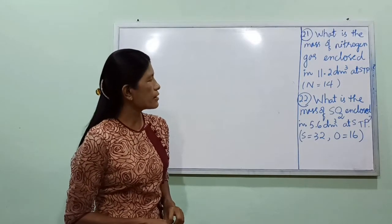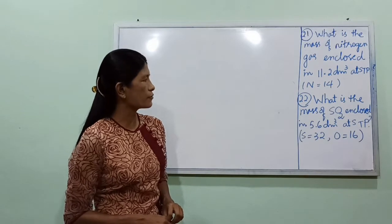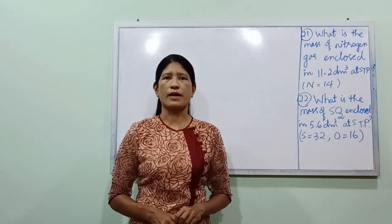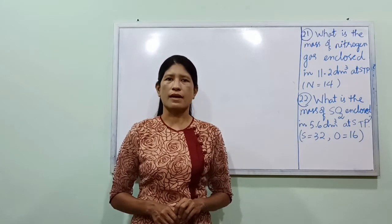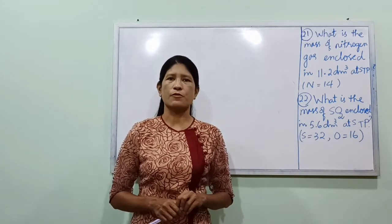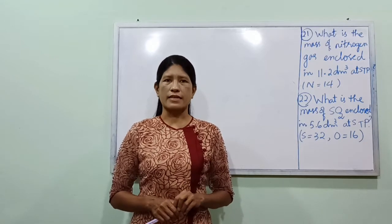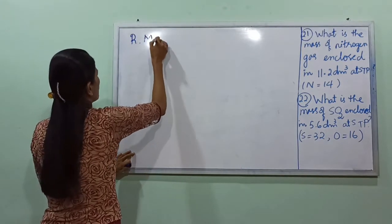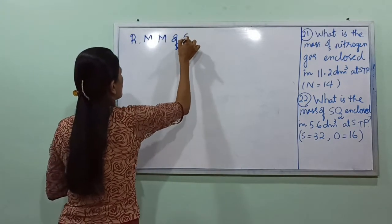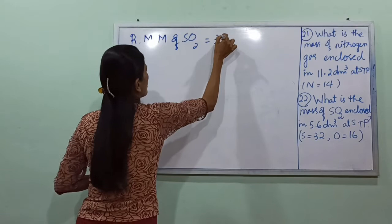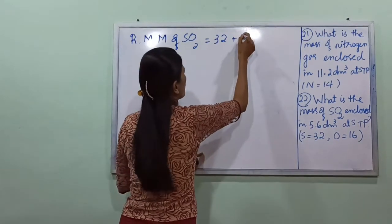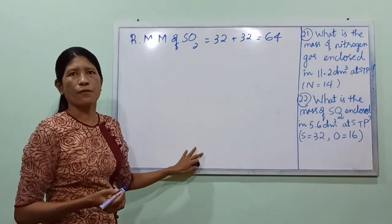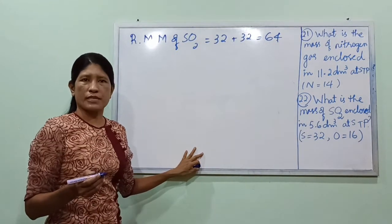What is the mass of sulfur dioxide (SO₂) given 5.6 dm³ at STP? Sulfur dioxide is a covalent molecular compound. The relative molecular mass of SO₂ equals S (32) plus O₂ (2×16) equals 64 grams per mole.